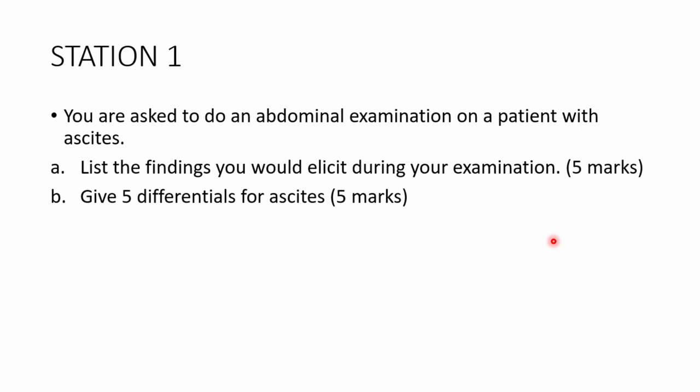Station 1: You are asked to do an abdominal examination on a patient with ascites. List the findings you would elicit during your examination — 5 marks. Give the 5 differentials for ascites — 5 marks. You can pause the video right now.